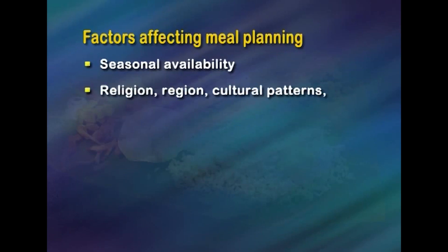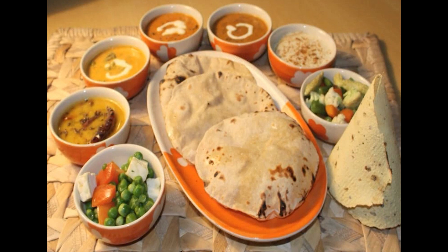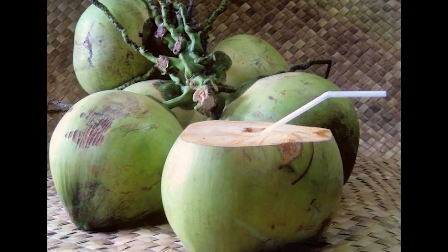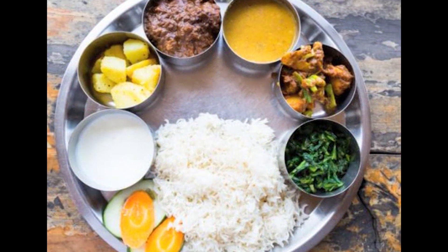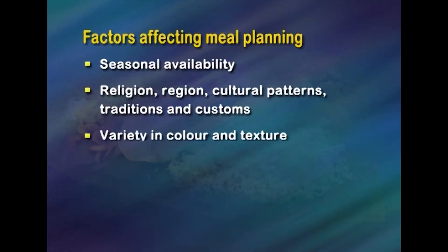Religion, region, cultural patterns, traditions, and customs: Regional factors influence meal planning. For example, a north Indian will consume more wheat, while those near the coastal region will consume more coconut, fish, etc. Similarly, your staple food would be rice if you are a south Indian. Religious beliefs prevalent in the family also have an influence — for example, a vegetarian will not have any meat or meat products.